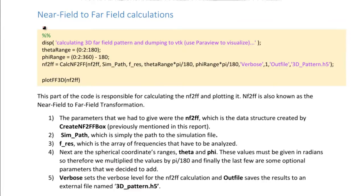This part of the code deals with near field to far field calculations. So, first we input the theta range, which is from 0 to 180 with a tenth of 2, and the phi range is from 0 to 2 pi, or in degrees 360.